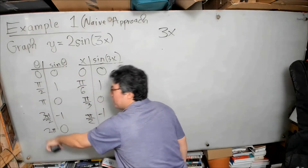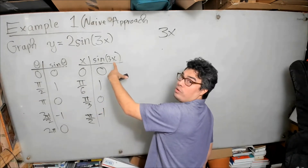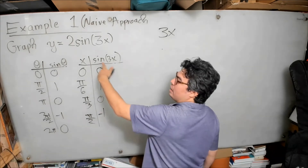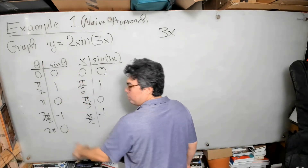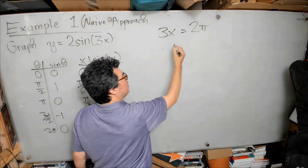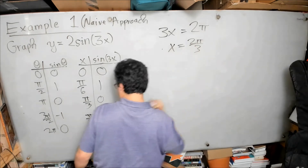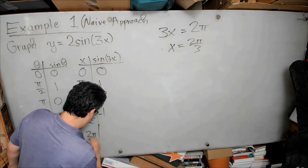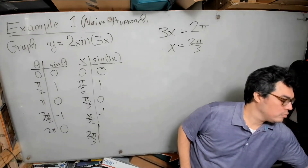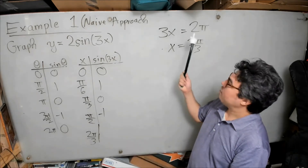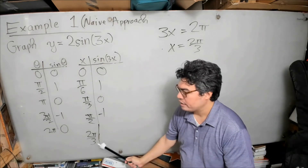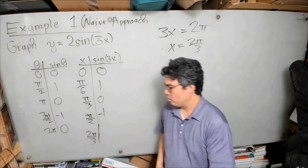Finally: what does x have to be so that 3x equals 2π? Then sine of 3x will equal sine of 2π, which is 0. So 3x = 2π, divide both sides by 3, and x = 2π/3. At x = 2π/3, 3x is 2π, so sine of 3x is 0.